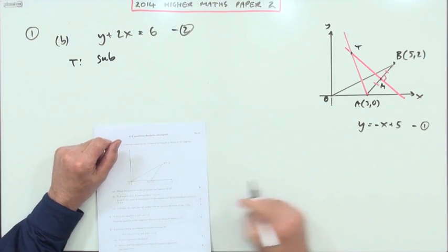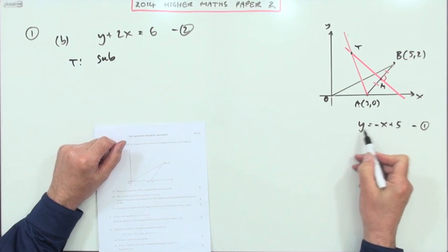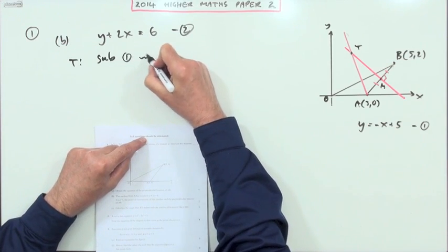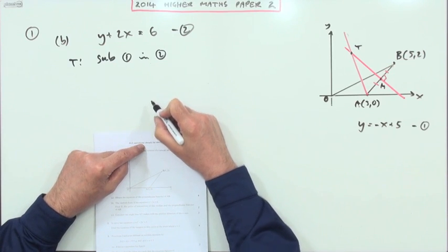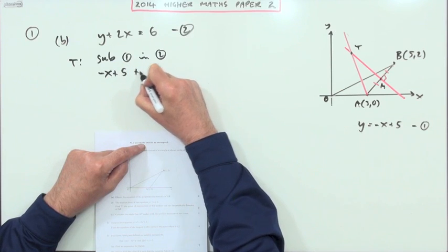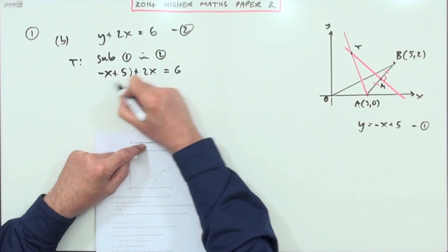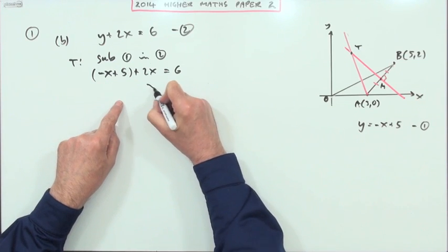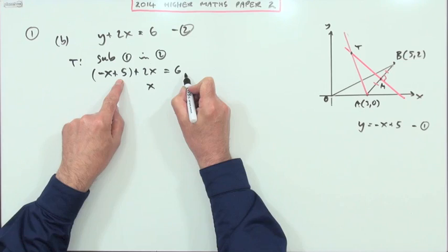You could do elimination if you like, if you had that in the form of y + x = 5, you could use it with that. I'm just going to substitute 1 into 2 so that I've got instead of that y, I've got -x + 5 + 2x = 6. That was the substitution, and straight away that just becomes x.